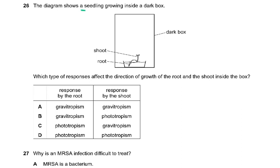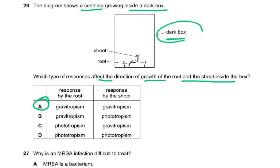Question 26: The diagram shows a seedling growing inside a dark box, so there is no light, meaning there cannot be any phototropism. Which type of responses affect the direction of growth of the root and shoot inside the box? The answer is A, because both are showing responses to gravity — one is positive gravitropism and one is negative gravitropism. The shoot grows away from gravity and the root grows towards gravity. Since it is a dark box, there is no response to light.